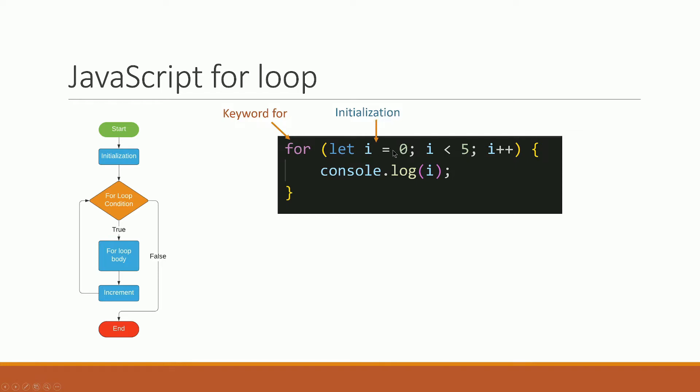We use initialization: let i = 0. I will be zero at assignment. Zero is the starting value.